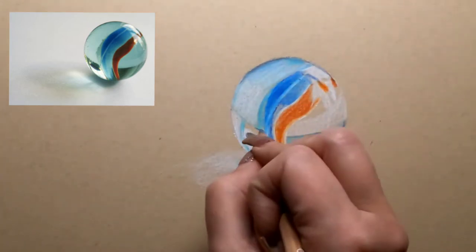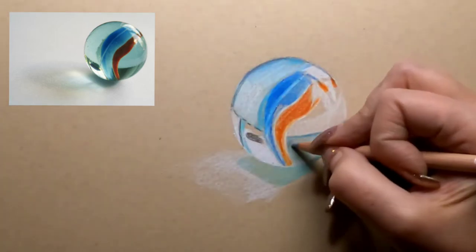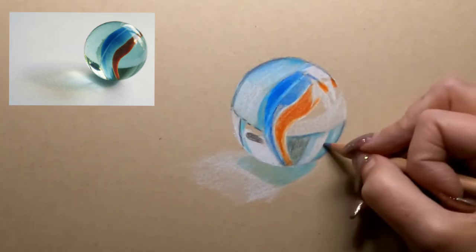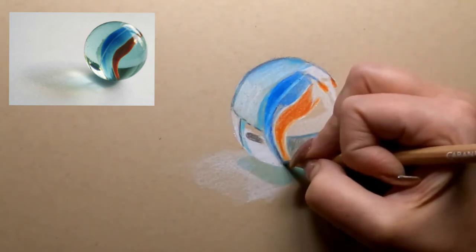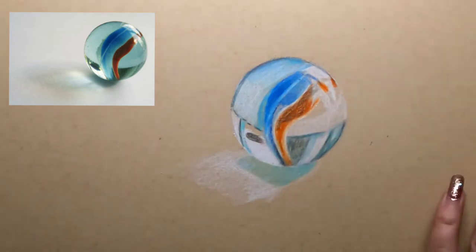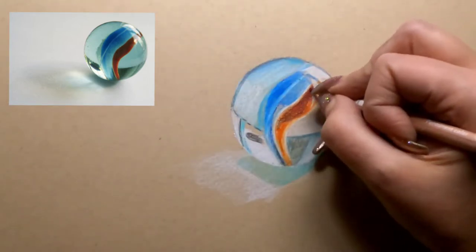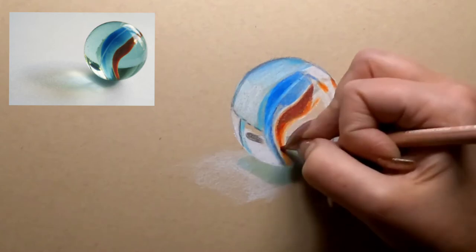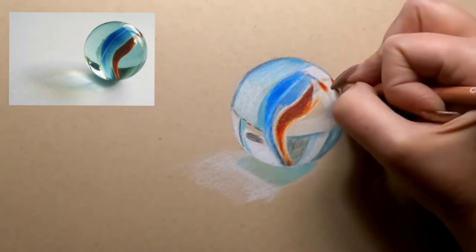So you can see we're starting to get kind of a translucent effect on the marble, and then I'm going in where our deeper tones are back in with a little bit of that gray, and then we're gonna add some more red into that red part of the ribbon. So the orange still shows through.